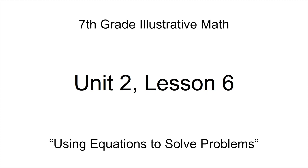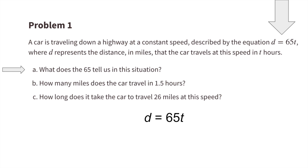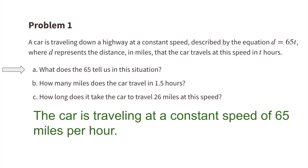7th grade, Unit 2, Lesson 6: Using equations to solve problems. Number one: a car is traveling down a highway at a constant speed described by the equation d equals 65t, where d represents the distance in miles and t represents time in hours. Part a: what does the 65 tell us? The car is traveling at a constant speed of 65 miles per hour.